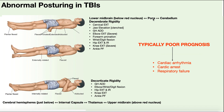In decerebrate rigidity, you'll see cervical extension, elevated and clenched jaw, glenohumeral adduction with arms by the side, pronounced elbow extension with strong resistance to manual flexion, forearm pronation, wrist and digit flexion, hip extension with slight internal rotation, severe knee extension, and plantar-flexed ankles.